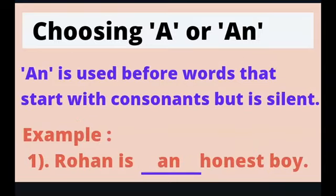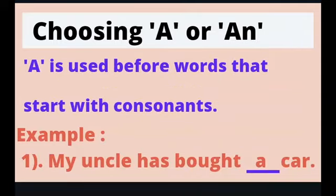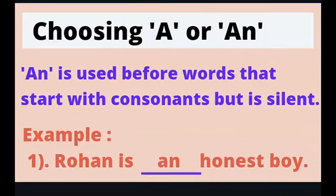'An' is used before words that start with consonants that are silent. For example: Rohan is an honest boy. Here 'h' may be a consonant but it is silent, so we use 'an'. To summarize: 'a' and 'an' are both used for singular nouns, but 'a' is used for nouns beginning with consonants, whereas 'an' is used for nouns that start with a silent consonant, as in the case of 'honest'.